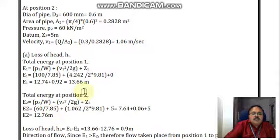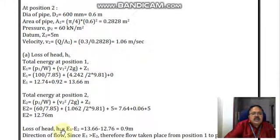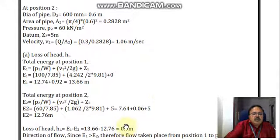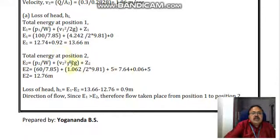The energy of the flowing fluid at section 1 is 13.66 meter. By the time it reaches section 2, the energy is 12.76 meter. Because of the change in diameter, there is an energy loss. The loss of head is the difference E1 minus E2, which is 0.9 meter. Since energy is more at section 1 and less at section 2, the flow is taking place from section 1 to section 2. Thank you.